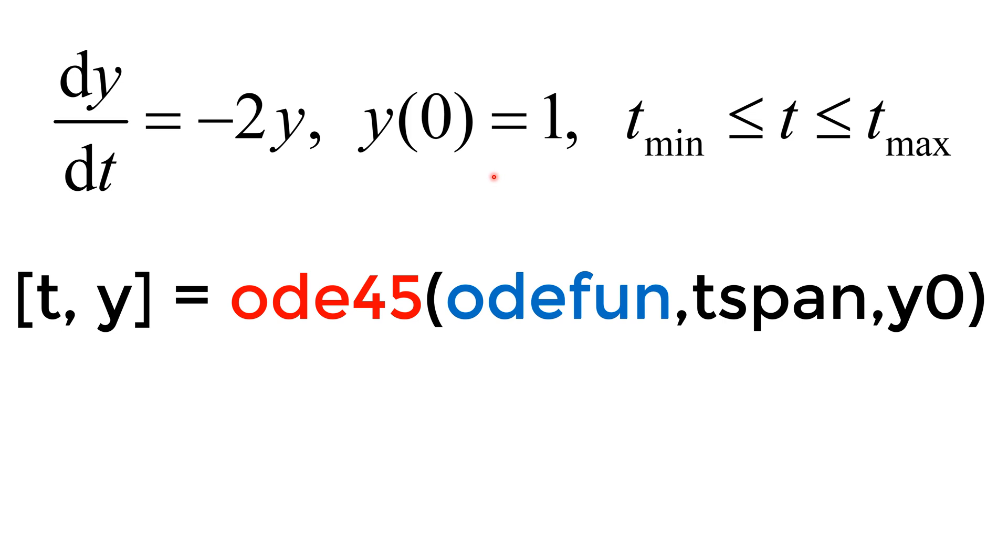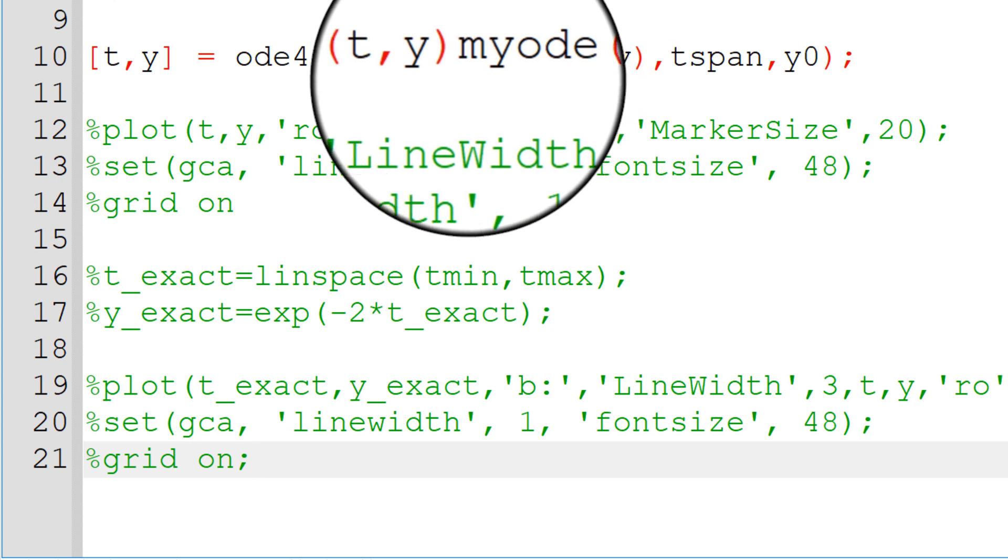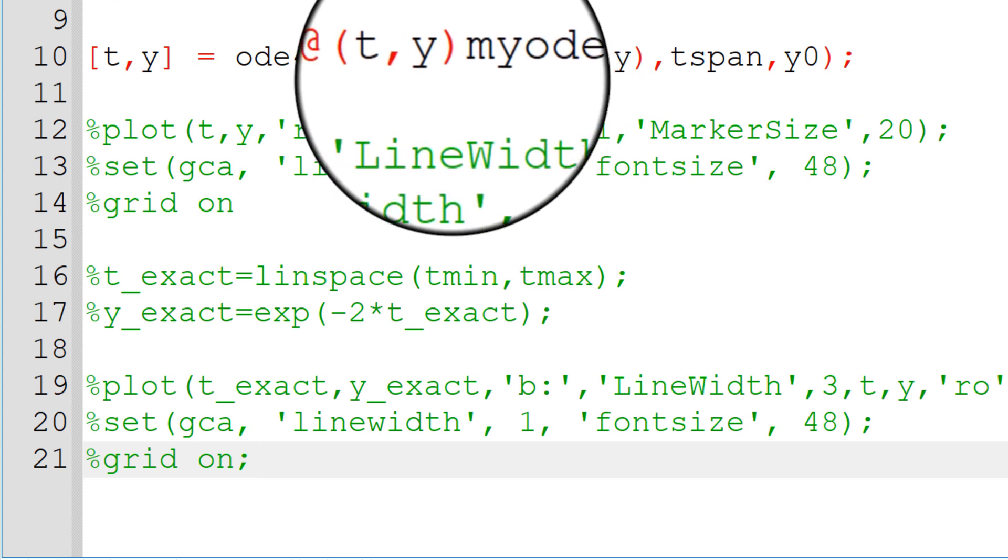y0 equals 1. To work with the ODE45 function, I use t and y as output variables. You can start with t, y and square brackets.